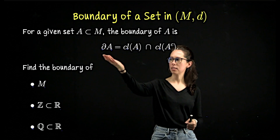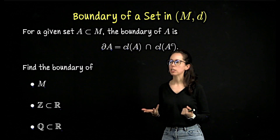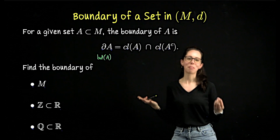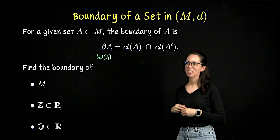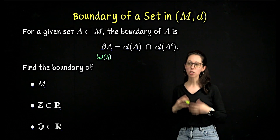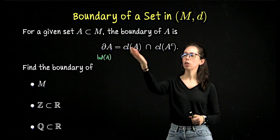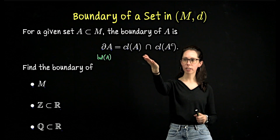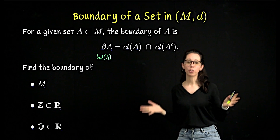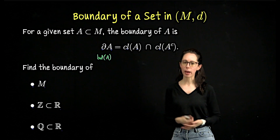I'm going to use what looks like a partial derivative symbol to mean boundary, but you could also see this denoted as BD of A, or boundary of A. The boundary of A is defined as the intersection of two closed sets. The boundary of A is the closure of A intersect the closure of A complement. If you can close off A and close off A complement, what do they have in common? That is the boundary of the set.